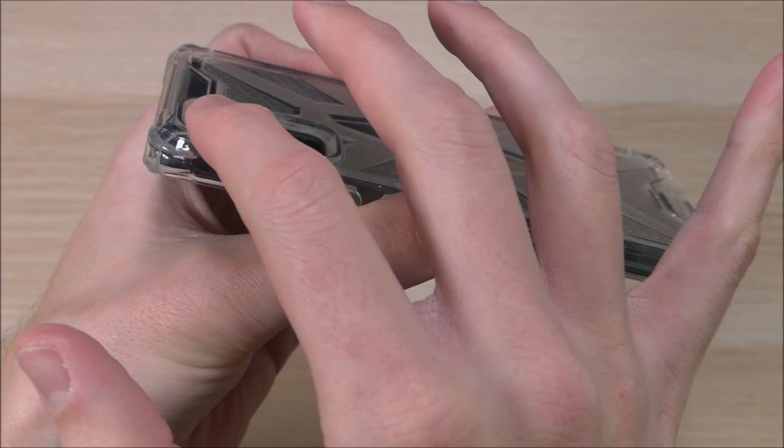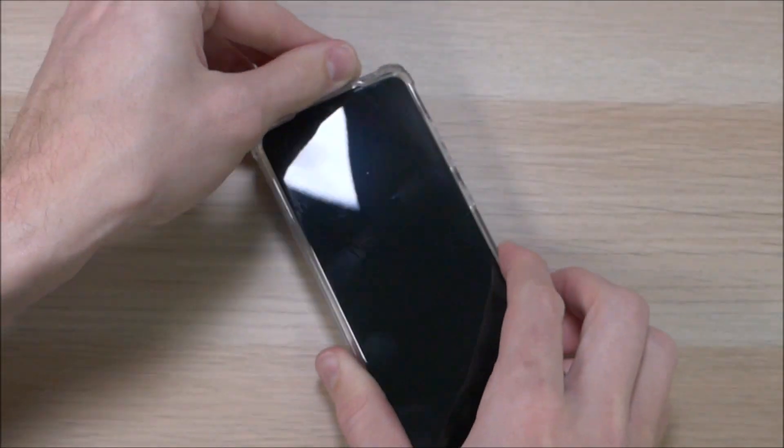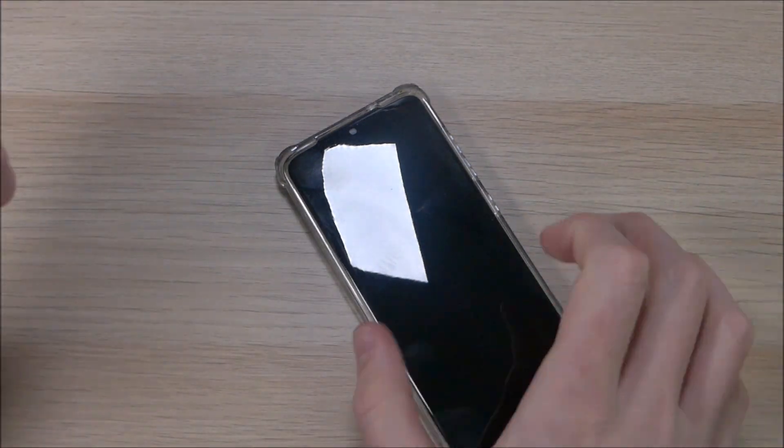Here on the back we do have the extra large cutout for the camera, the flash, and the other sensors. And as you can see there, it's nice and deep so you can set that down without having to worry about your camera lenses getting scratched up.